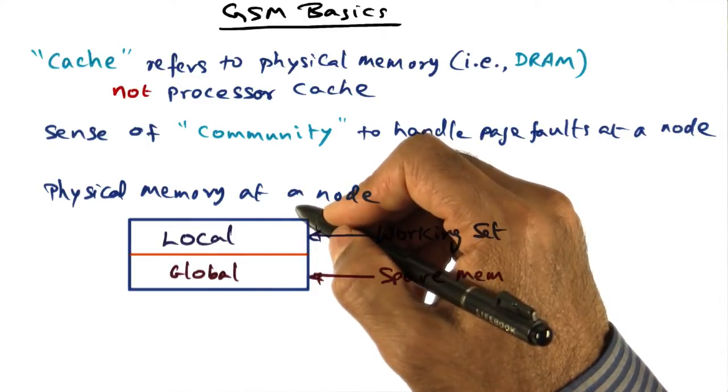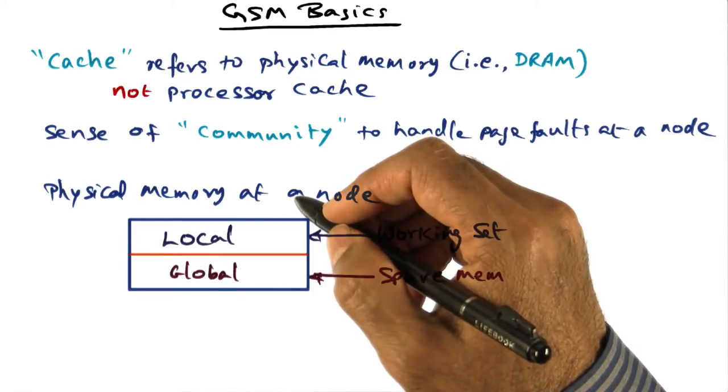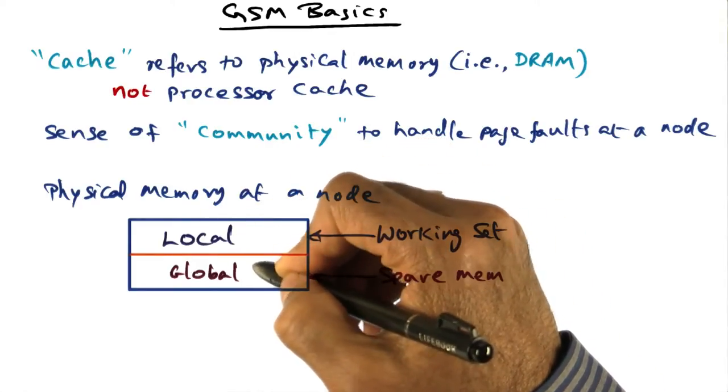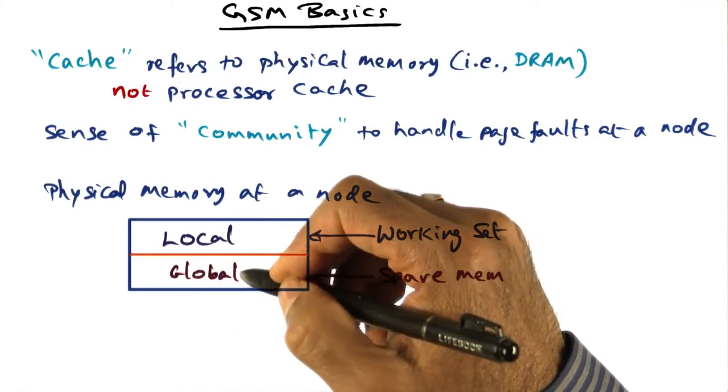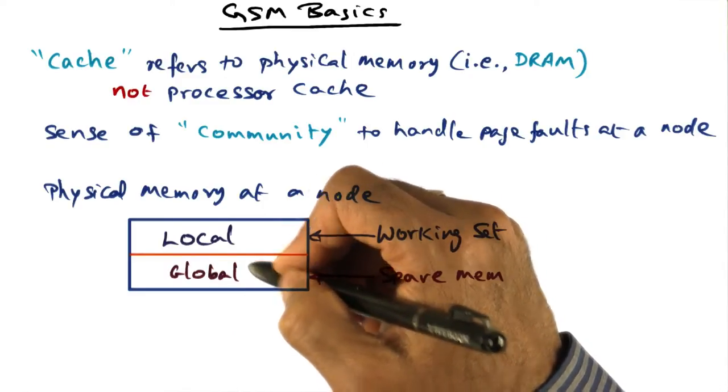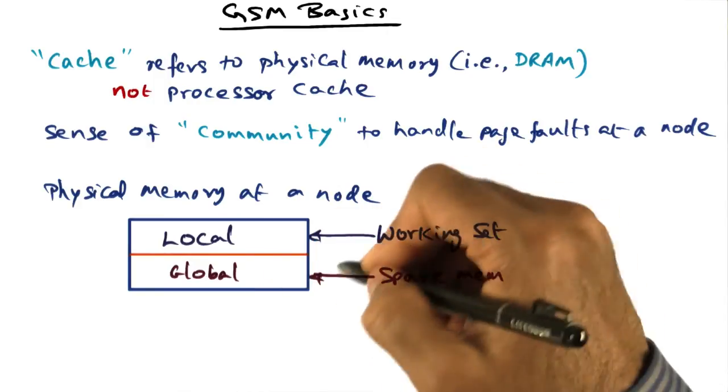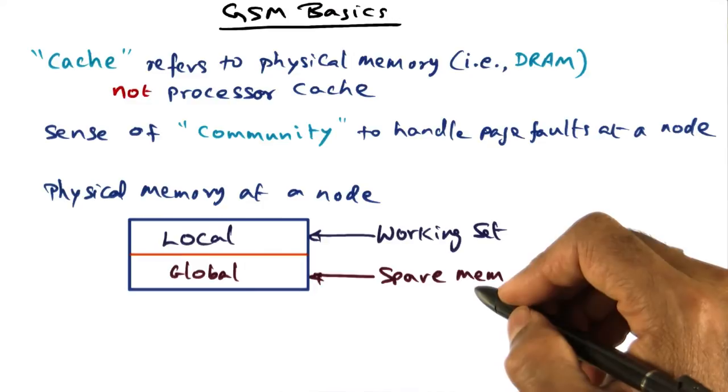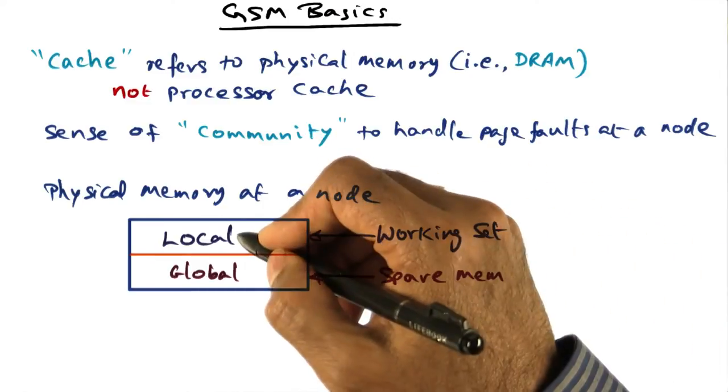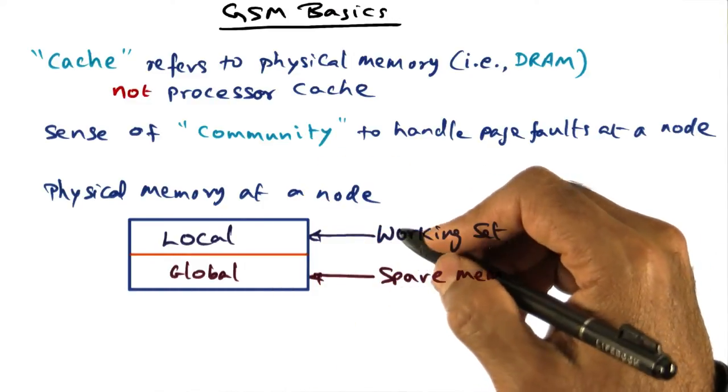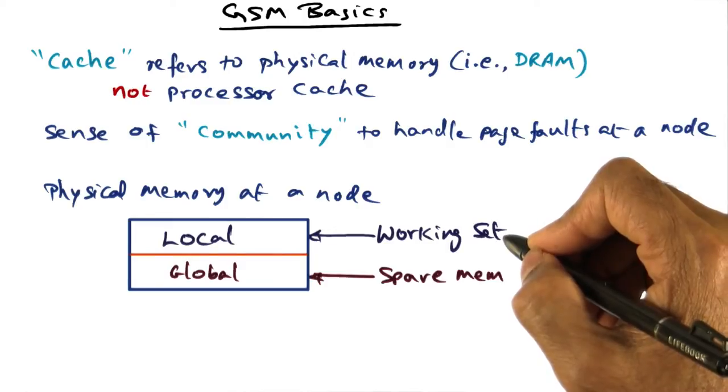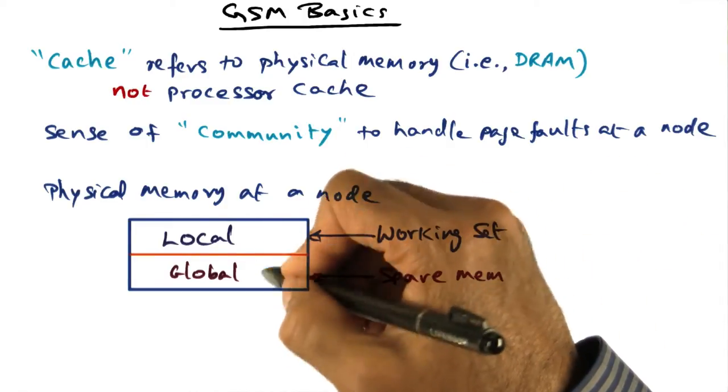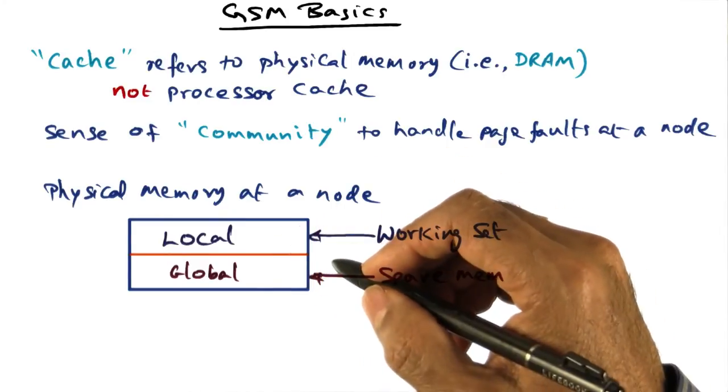On the other hand, if I go off for lunch, my workstation is not in use, and in that case, my local part is going to shrink, and I can house more of my peers' swapped out pages in my global part of the physical memory. So the global part is spare memory that I'm making available for my peers, and local part is the part that I need for holding the working set of the currently active process at my node, and this boundary keeps shifting depending on what's going on at my node. Pretty simple.